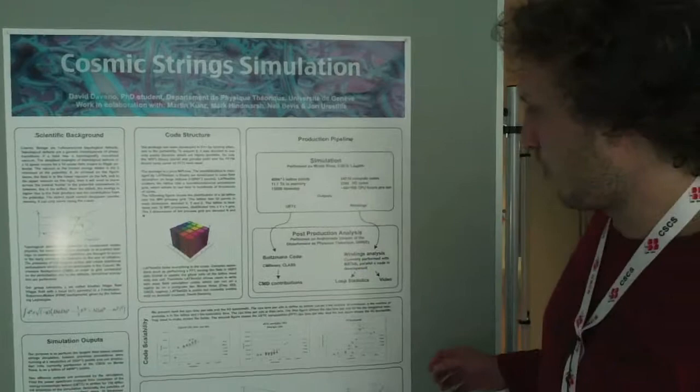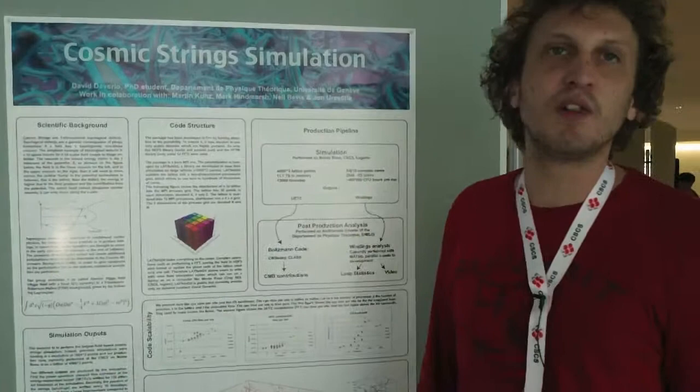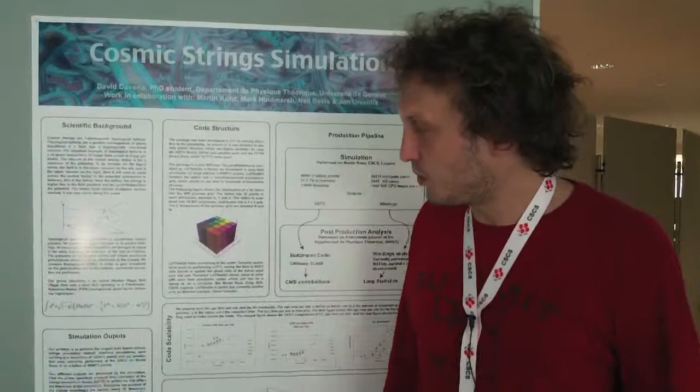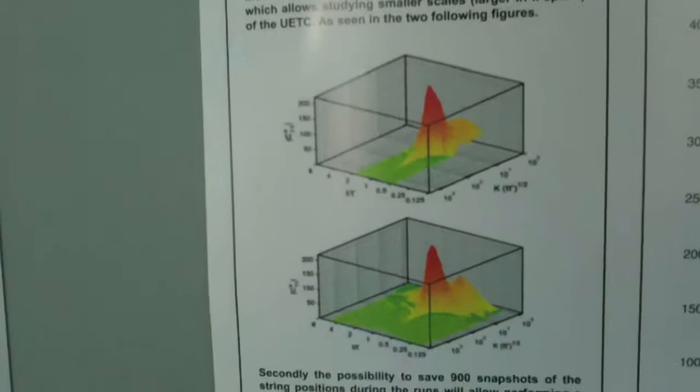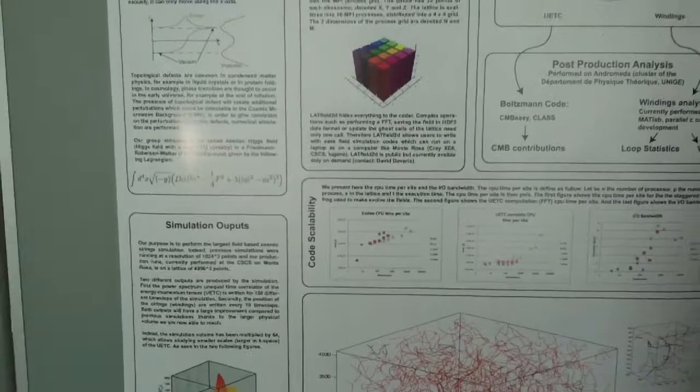And also the second output is what we call the UETC, the unequal time correlator of the energy momentum tensor. And from that output we are able to build up the CMB constraint. Our data will be used for the Planck data analysis.